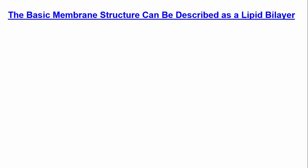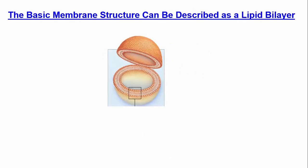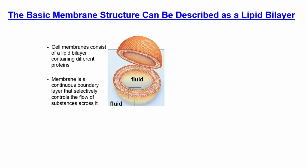Let's talk about the basic membrane structure, identified as the lipid bilayer. We have a spherical-shaped membrane, and if you look closely at the cross-section, you can see a bilayer structure — a layer and then a mirror image underneath it. We have fluid on the outside of the membrane called extracellular fluid, and fluid on the inside called intracellular fluid.